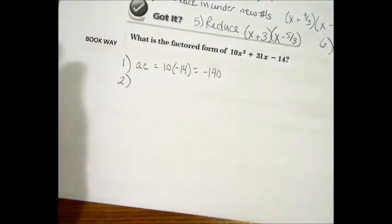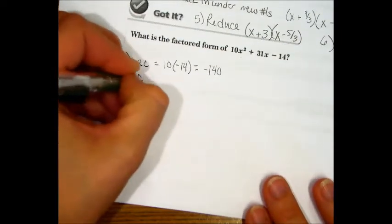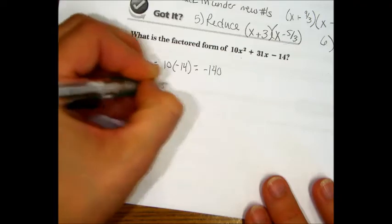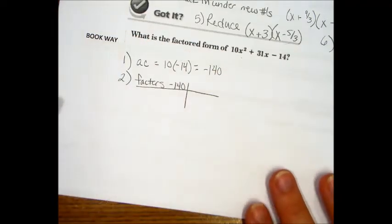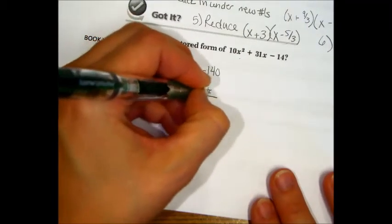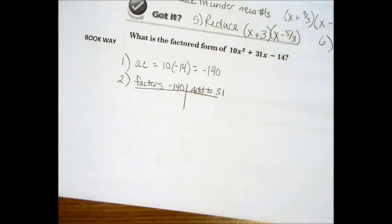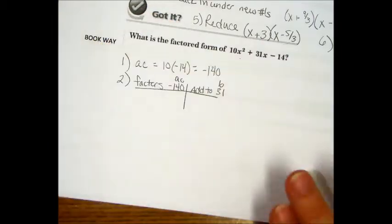What's next? We're going to take the factors of negative 140. Do you know what the word factors mean? It means the numbers that will multiply to make negative 140. And what does it need to add to? Add to 31. Because that's B. Factors of AC that add to B.